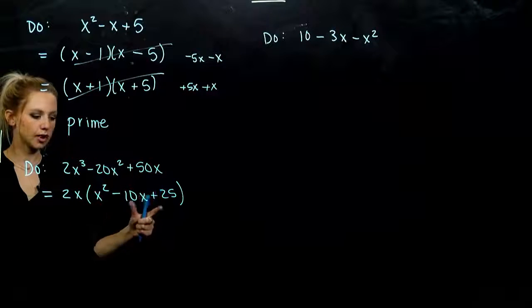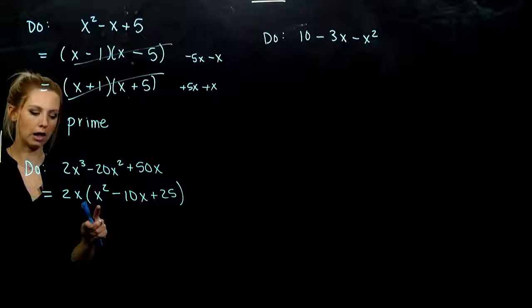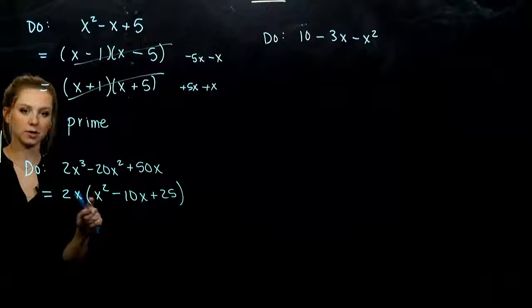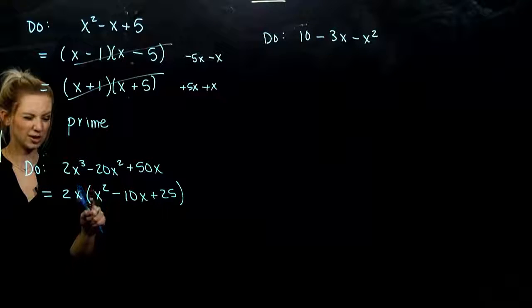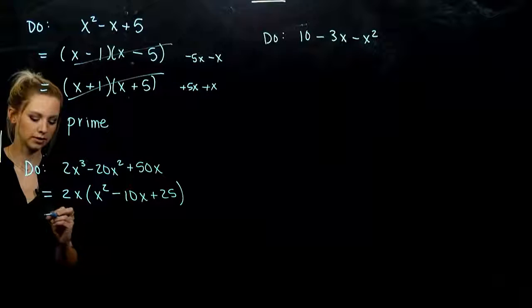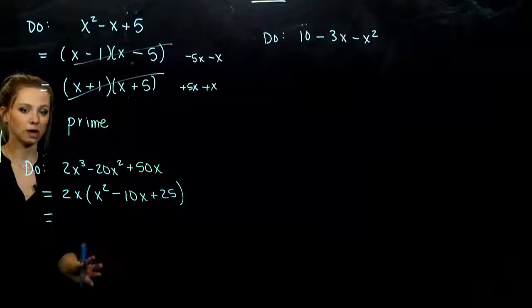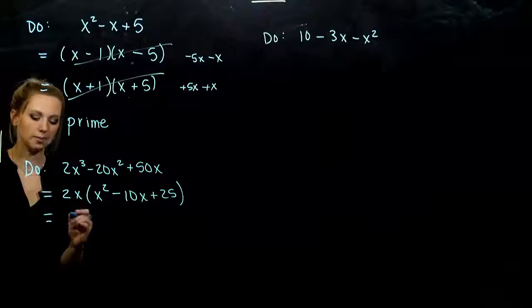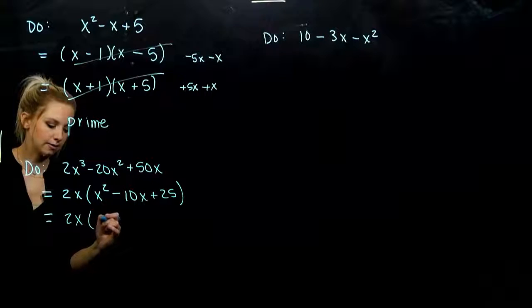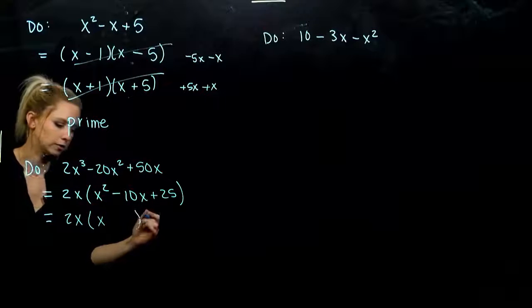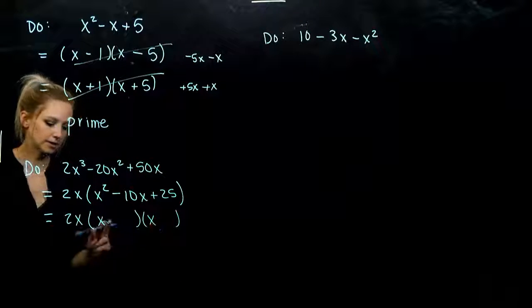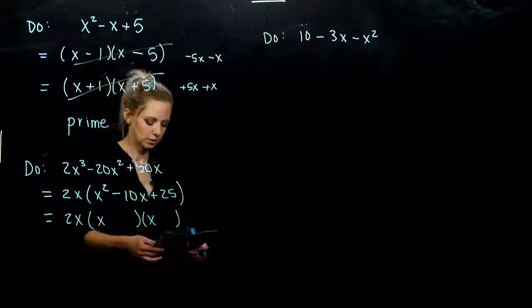So now we have a trinomial, three term polynomial, that we can deal with. We know how to handle these cases when there is a one out on the front. Whatever we've factored out, the greatest common factor needs to follow along. We can't forget to write him. He needs to hang on. And again, one. So I know it's going to be an x and an x.